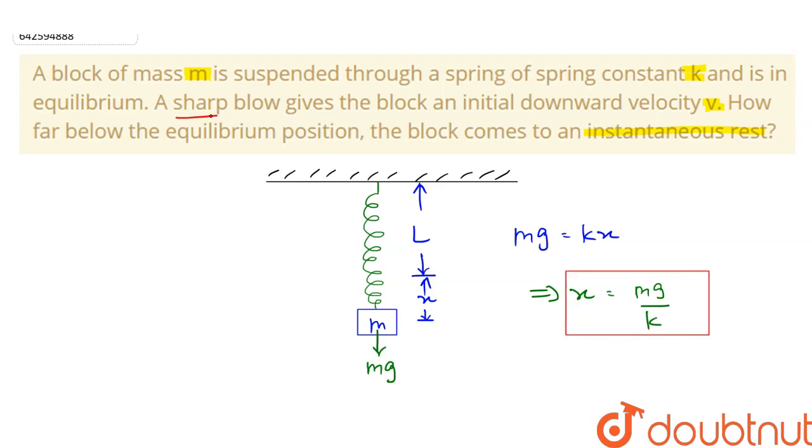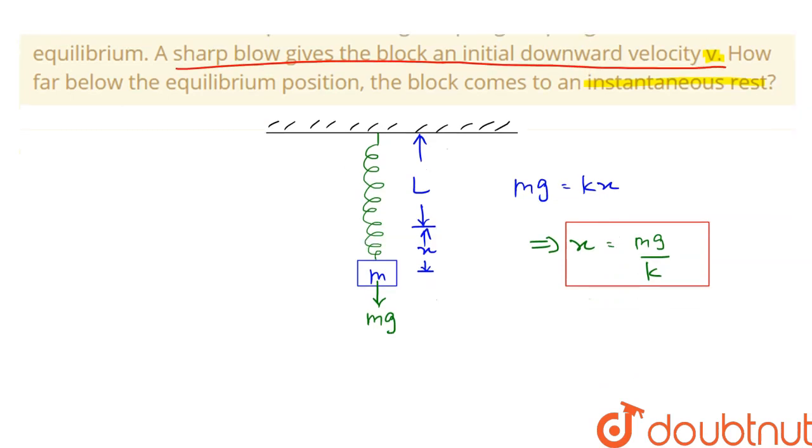Now we are told that a sharp blow gives the block an initial downward velocity. So after giving it a blow, it has an initial downward velocity v.